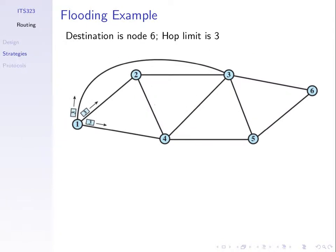If the hop limit was one instead of three, what would happen? Node one still wants to send to destination six. Even though we can see six is connected, node one is only connected to three other nodes and doesn't know where six is. If node one sets the hop limit to one, the packet is sent to neighbours two, three, and four. They receive it, decrement the hop limit to zero, and do not send it any further.